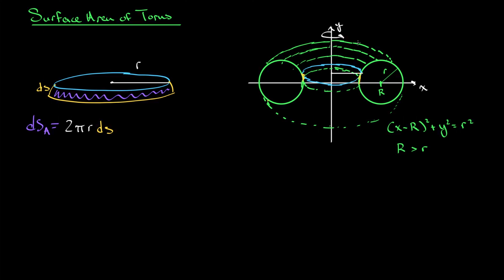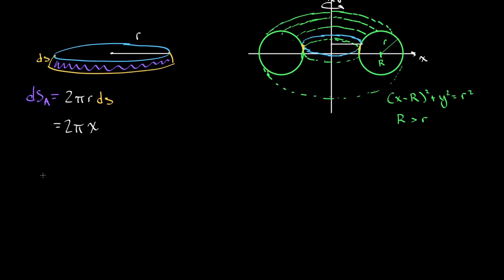All we need to do is apply this to our situation — we need to figure out what r is and what ds is. Since we are rotating around the y-axis, we know what r is: r is going to be x. So we're going to have 2πx. Now the question is how do we want to represent ds? For this video, I'm going to say we're going to integrate with respect to x. That means this x right here, which is the radius of these slices, is going to remain the way it is — we're going to leave it like it is.